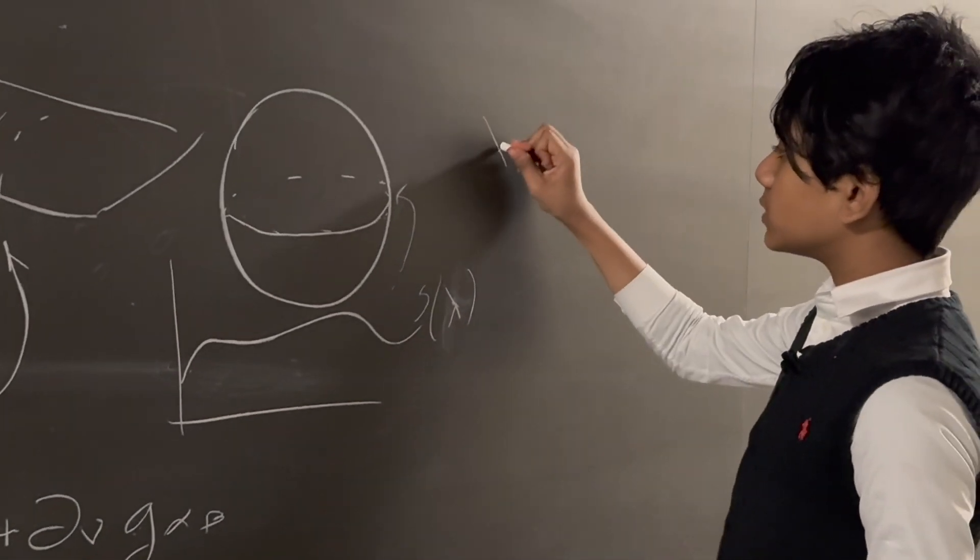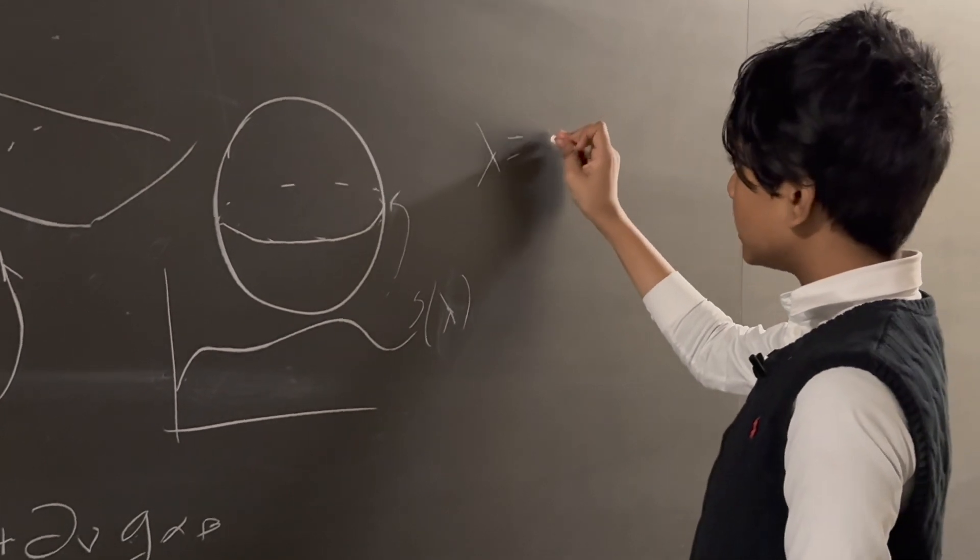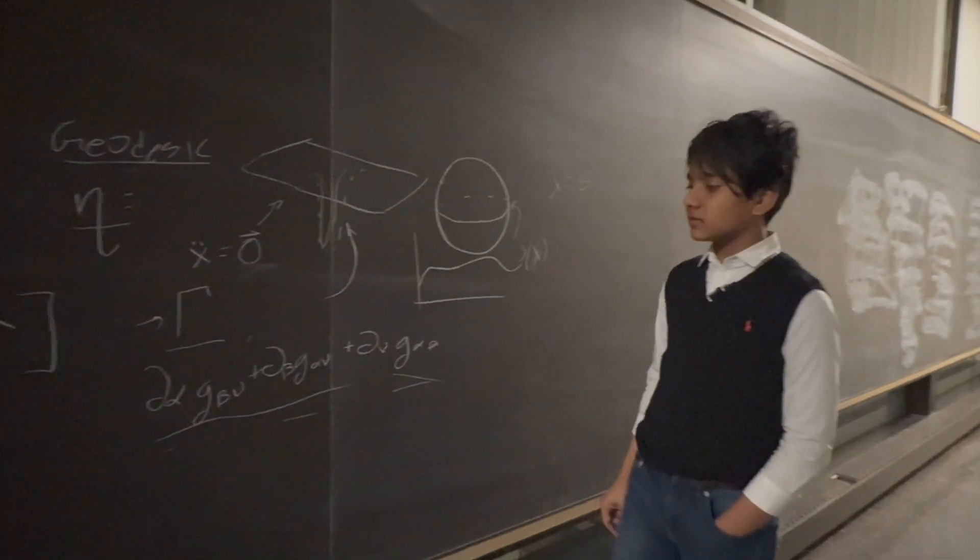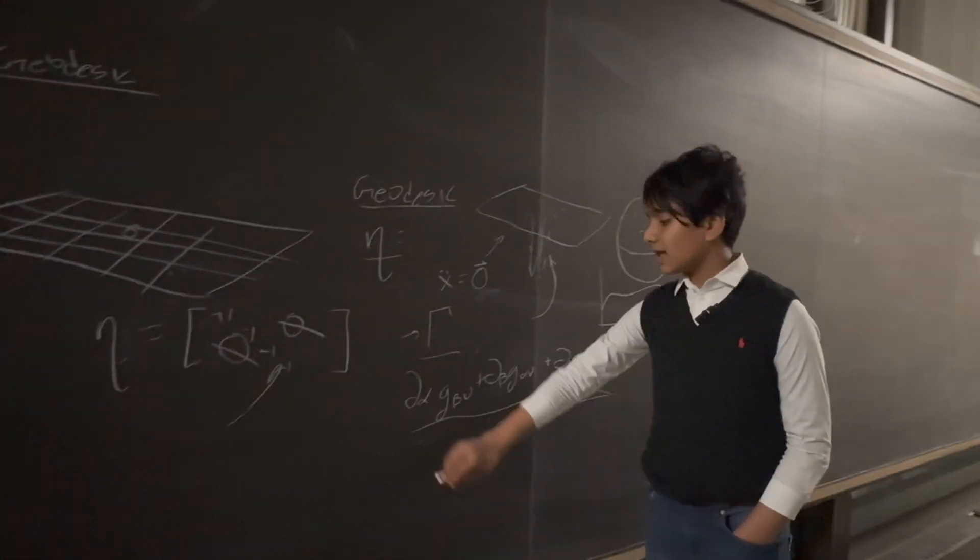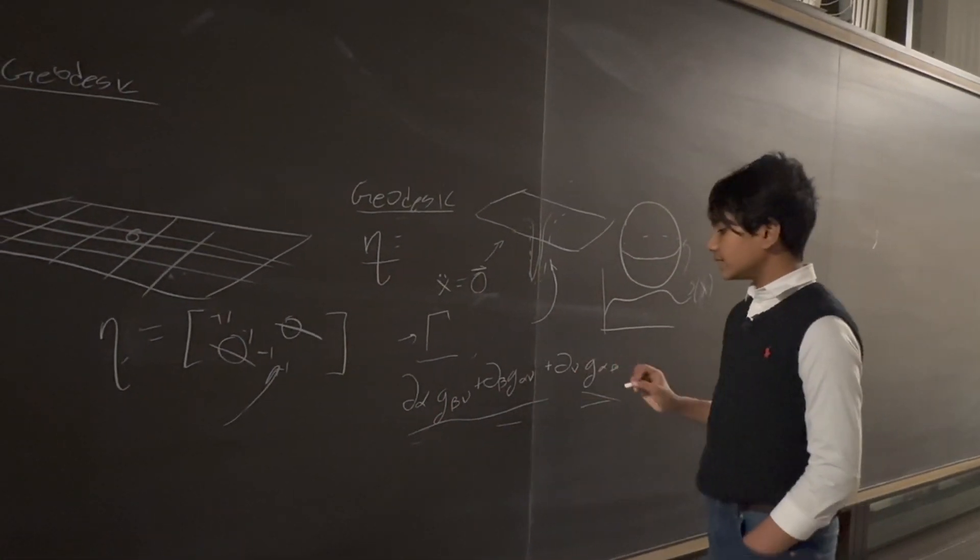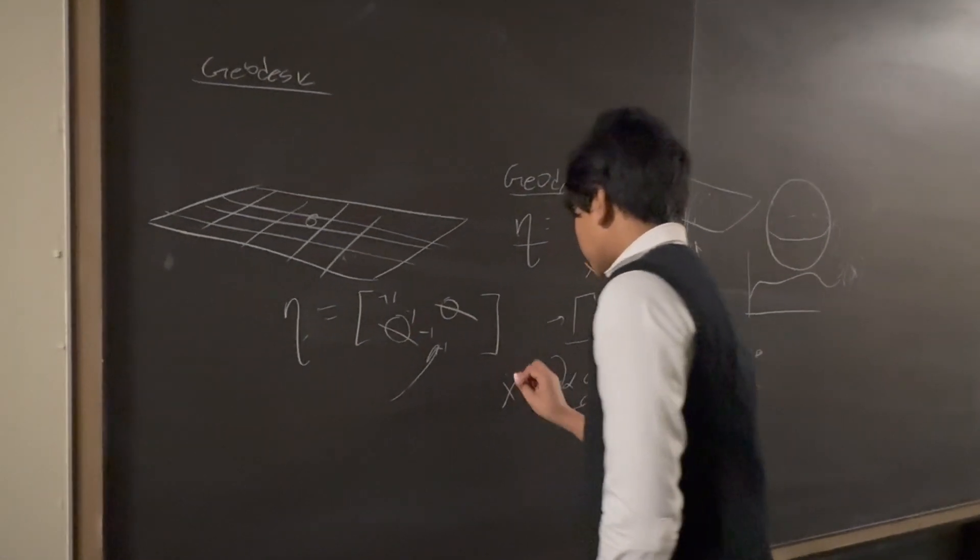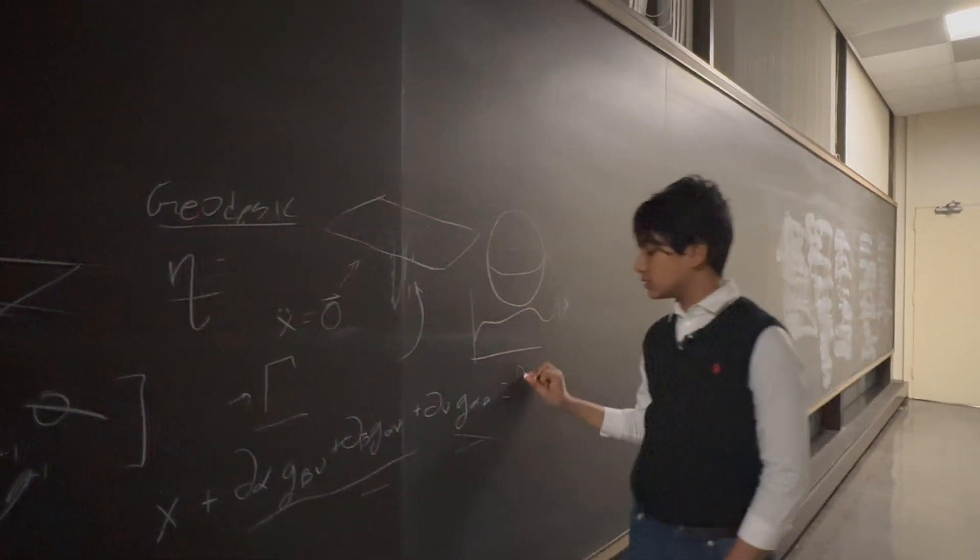So we can choose lambda to be something particularly nice, like the spacetime interval, and a lot of stuff gets canceled out immediately. So then, this is pretty much all that remains, along with the x double dot, and this is given to be equal to zero.